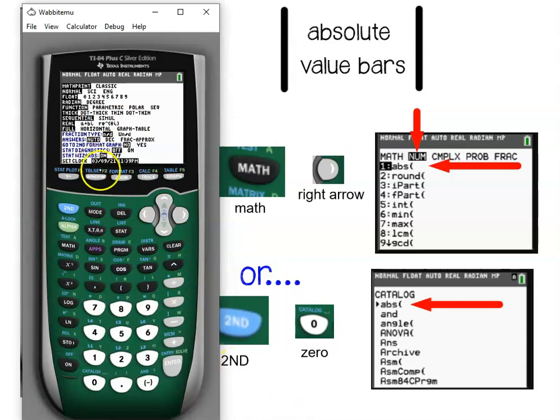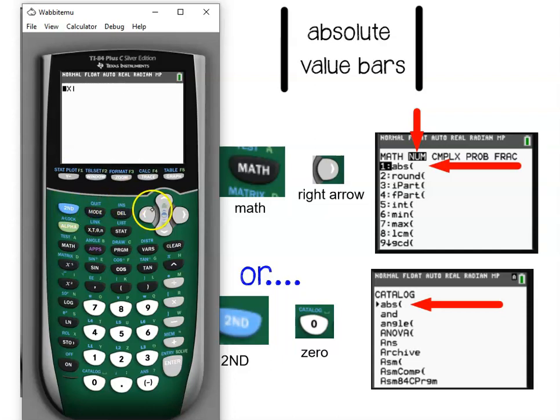So if I go back, press math, arrow over, choose number 1, absolute value, and then if you want to press the letter X, it's right here next to the green key. Now, if you want something else inside your absolute value bars, you can keep typing, but if you want something outside the absolute value bars, you need to press the right arrow.